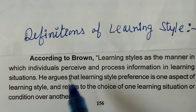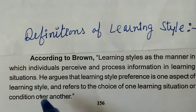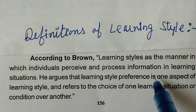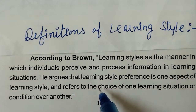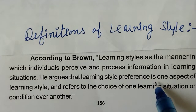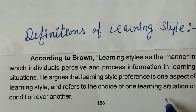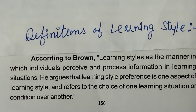First, according to Brown, learning styles are the manner in which individuals perceive and process information in learning situations. He argues that learning style preference is one aspect of learning style and refers to the choice of one learning situation or condition over another.